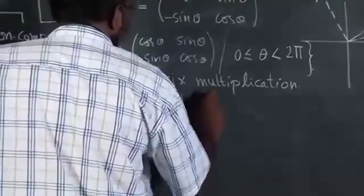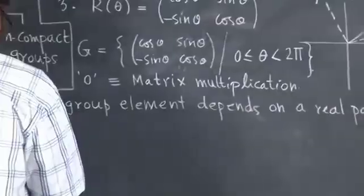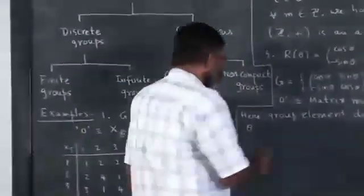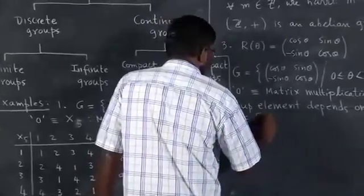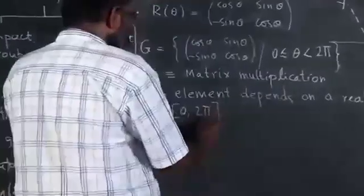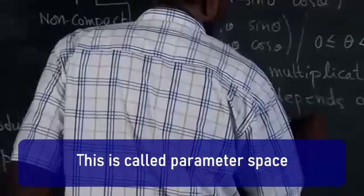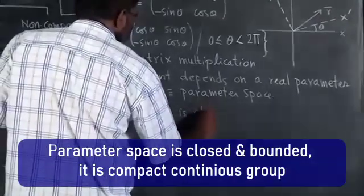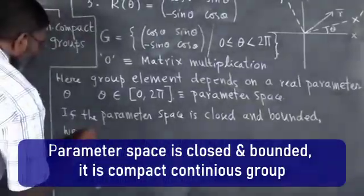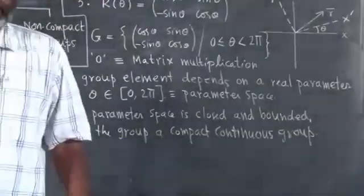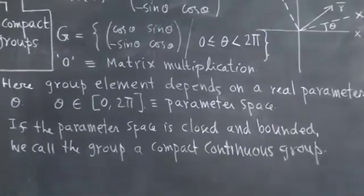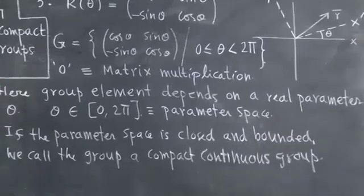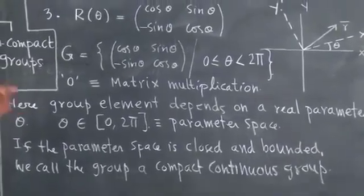Here the group element depends on a real parameter, in this case theta. If the parameter theta varies in some space — in this case 0 to 2π — then theta belongs to the closed interval [0, 2π], which is called the parameter space. If the parameter space is closed and bounded, we call the group a compact continuous group. The parameter is continuously varying but bounded: it cannot go beyond 2π or below 0.